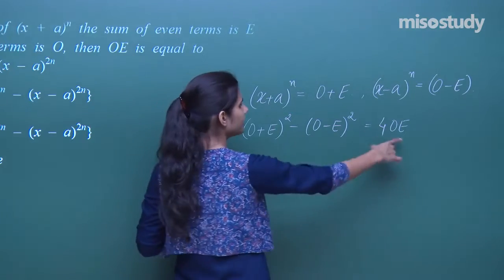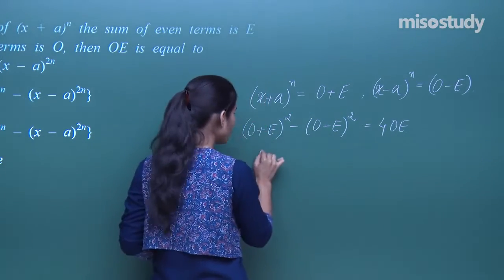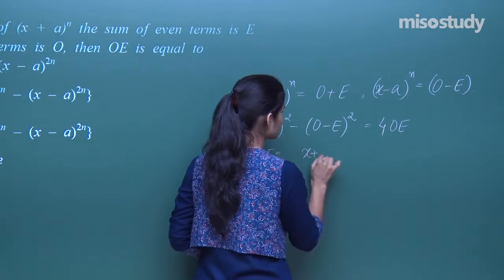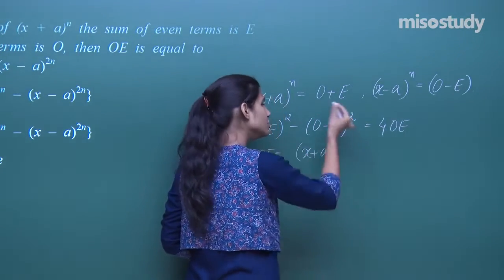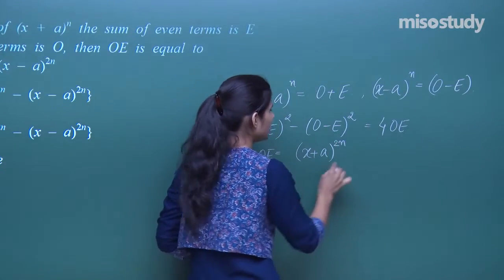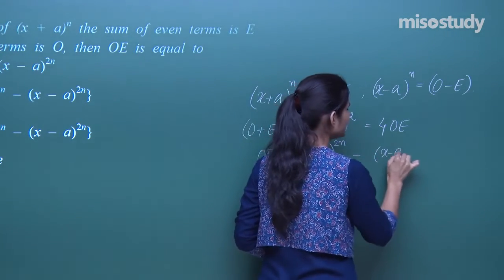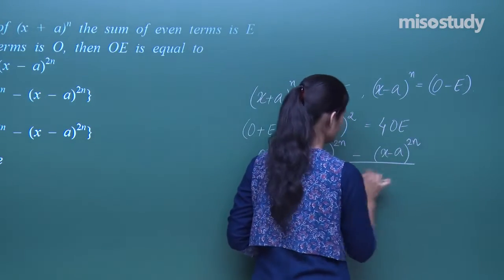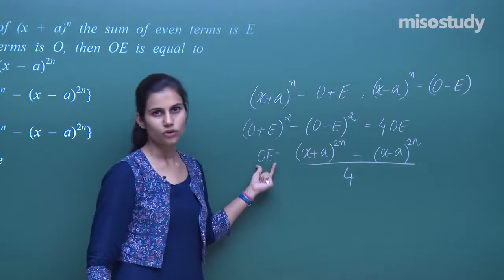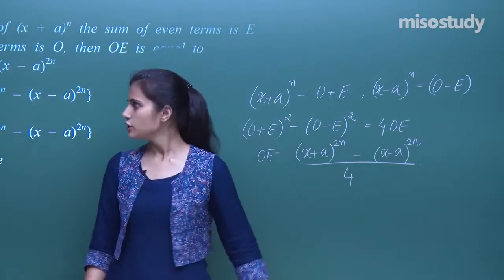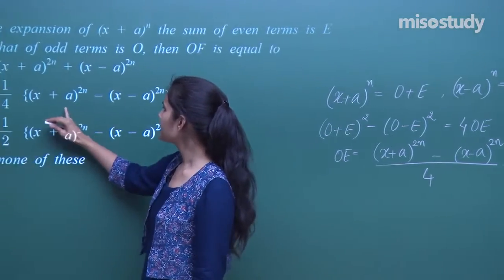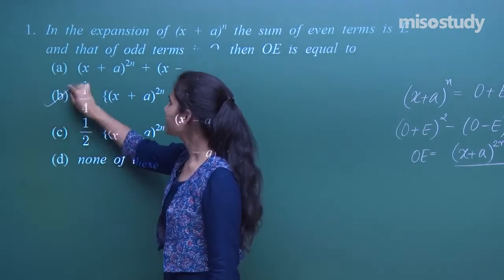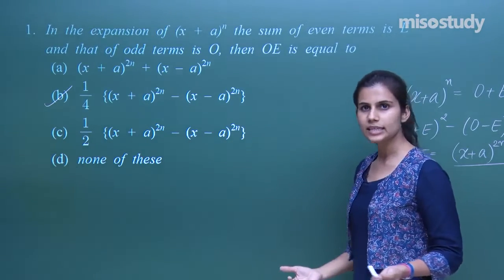So if this is valid, then OE equals [(O + E)² - (O - E)²] / 4, which is [(x + a)^n]² - [(x - a)^n]² all divided by 4. Therefore OE = [(x + a)^(2n) - (x - a)^(2n)] / 4.